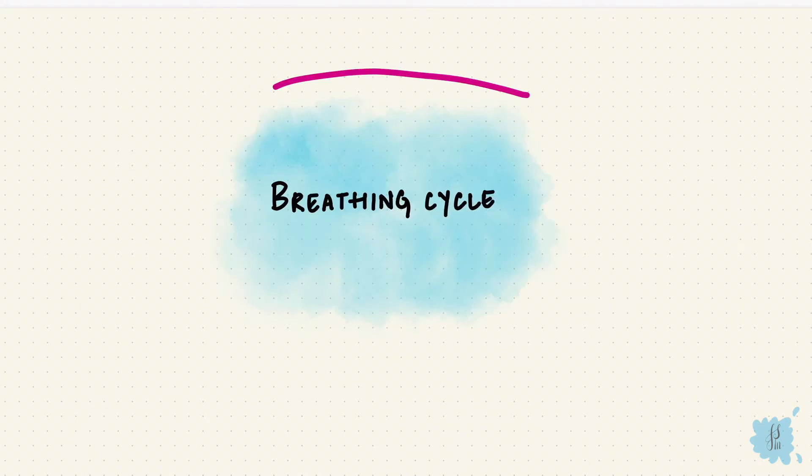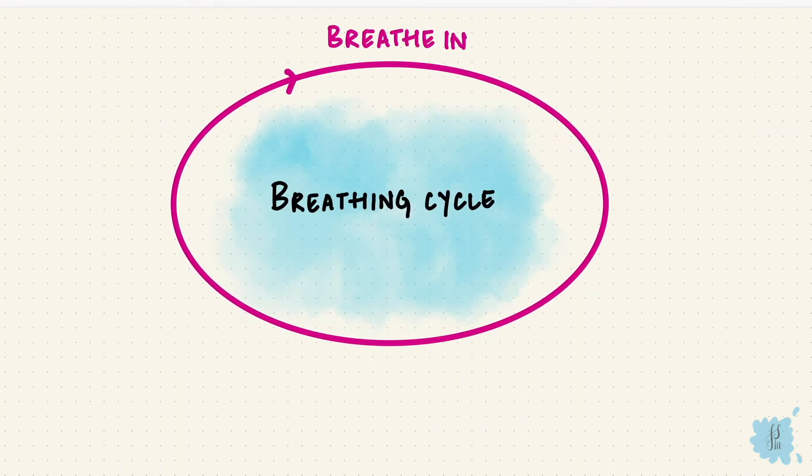The breathing cycle involves air going into the lungs during inspiration and air leaving the lungs during expiration. During this cycle there are pressure and volume changes. In this video we're going to put pressure and volume together and see what happens during one cycle of respiration.